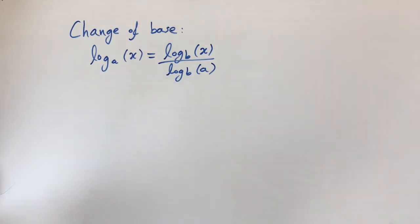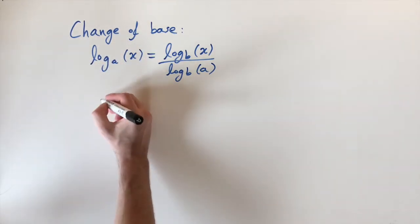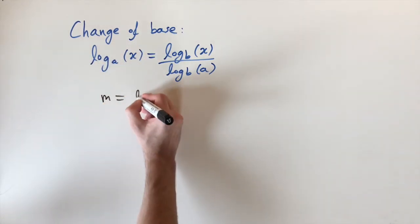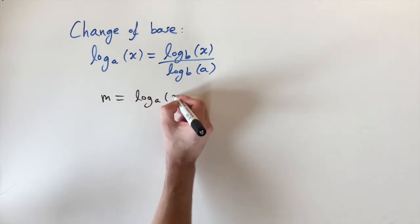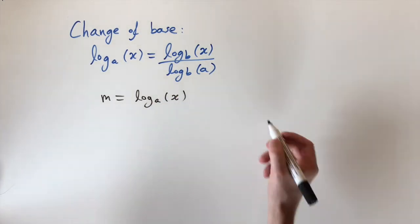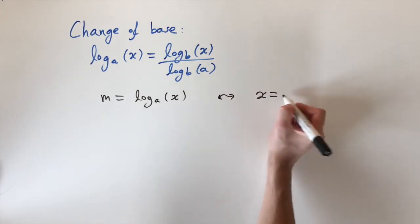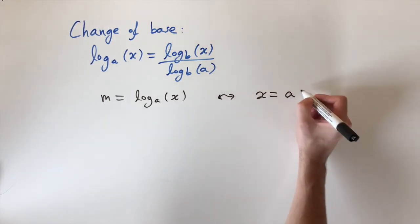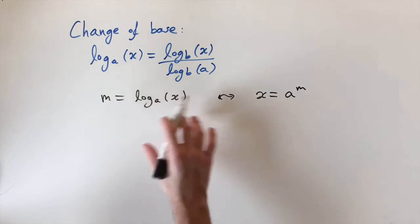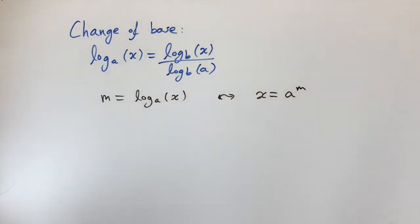So we want to prove this, and essentially we're going to convert into exponentials and then back into logarithms. To start off, I'm going to let m equal log base a of x. If we express that as an exponential, this is equivalent to x equals a to the power of m, because exponentials are the inverses of logarithms — so this is just an equivalent definition.